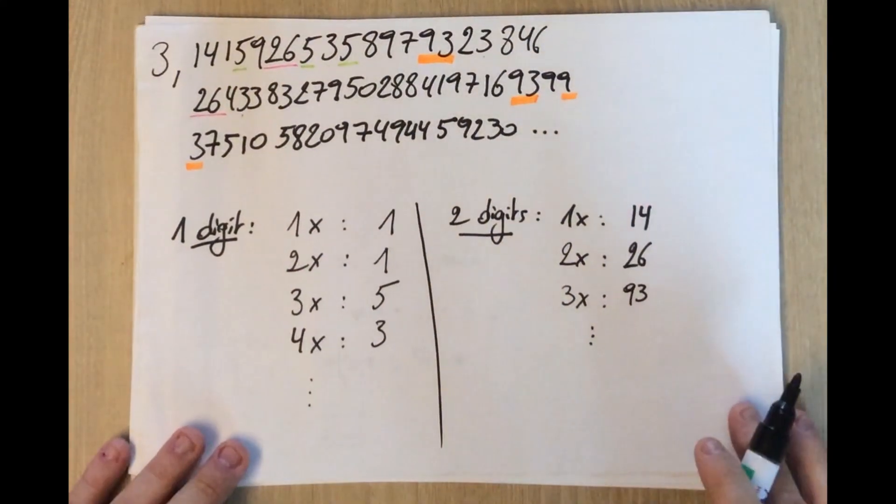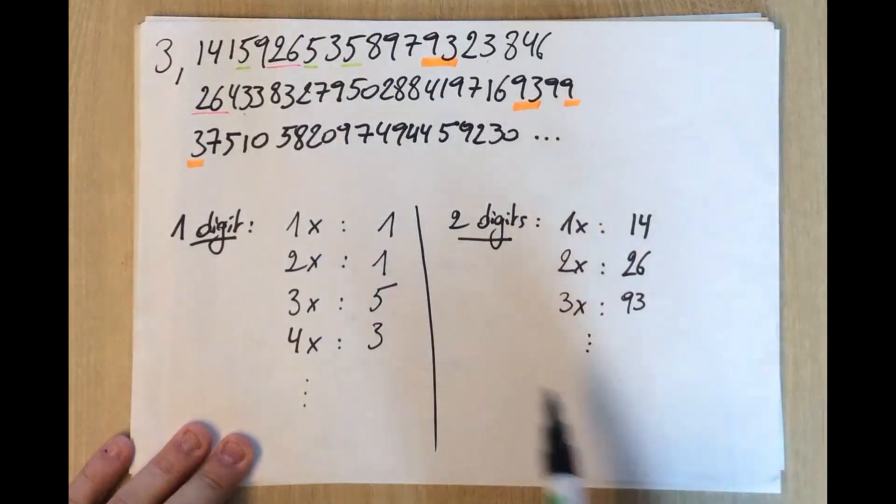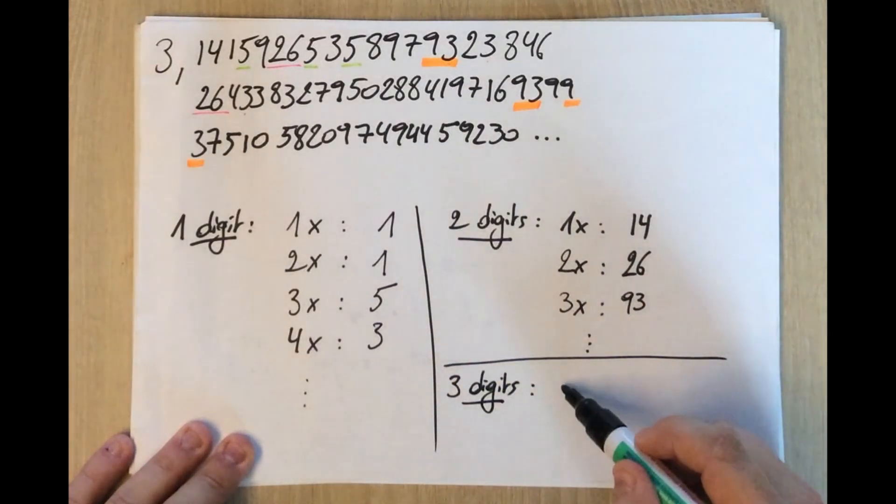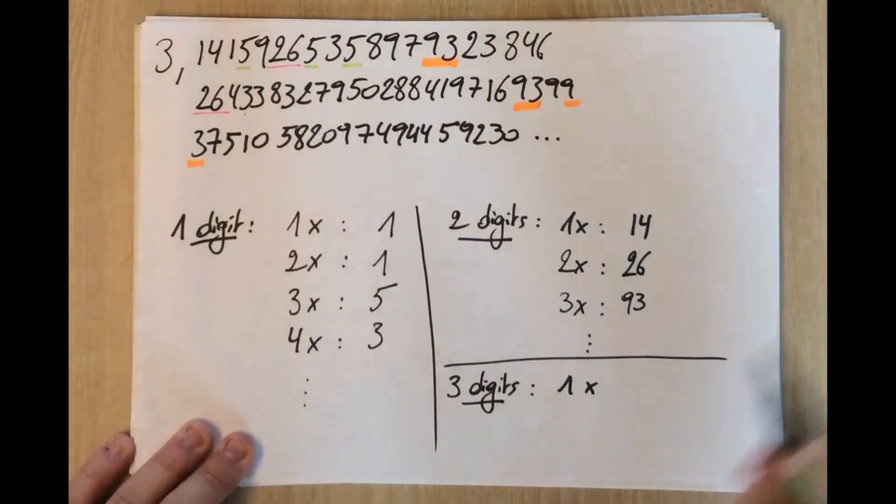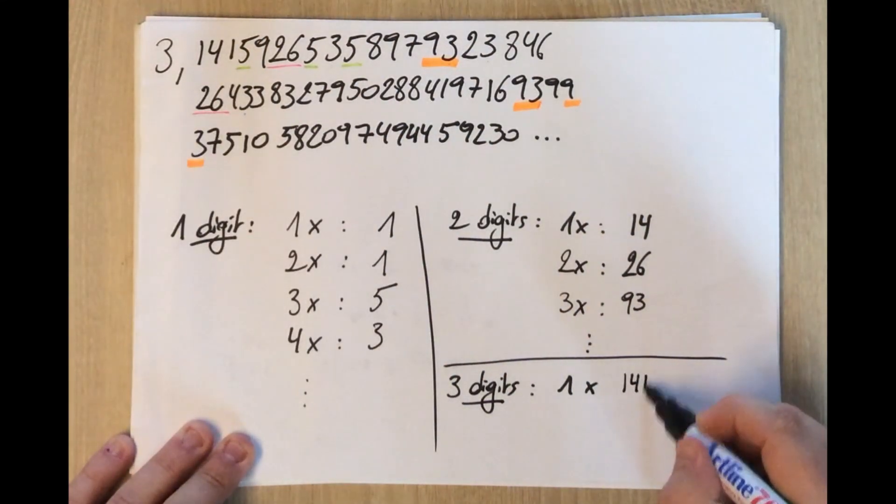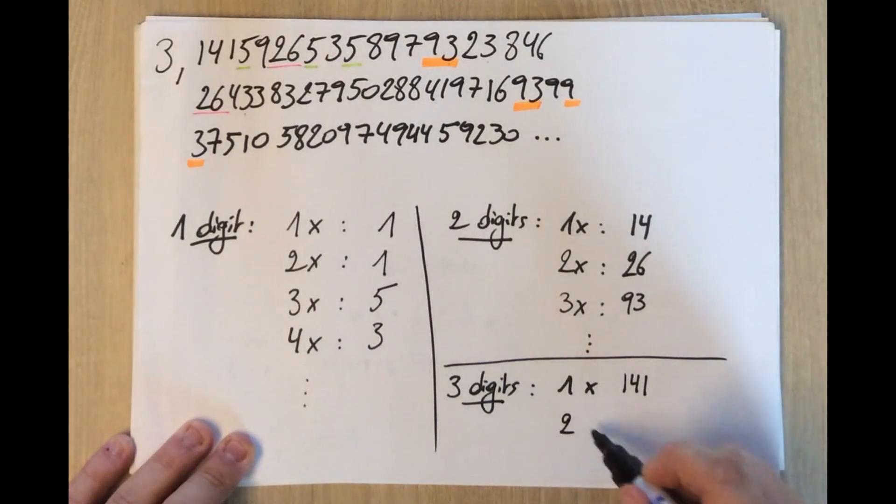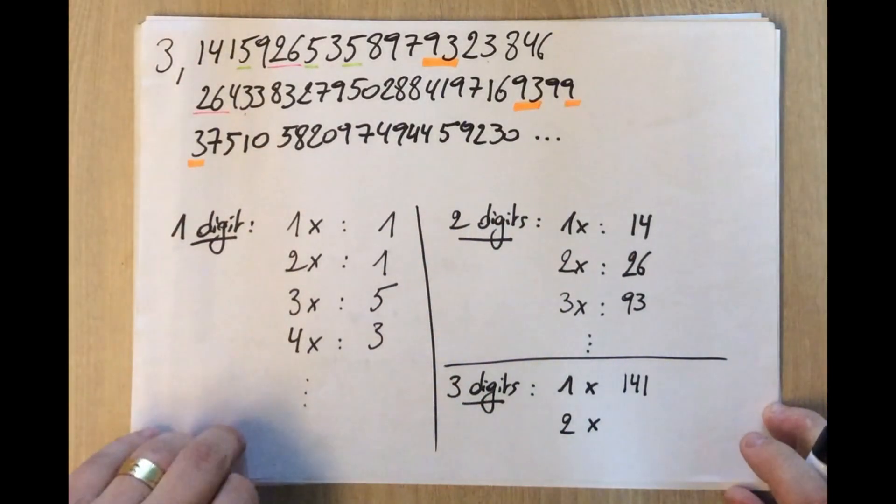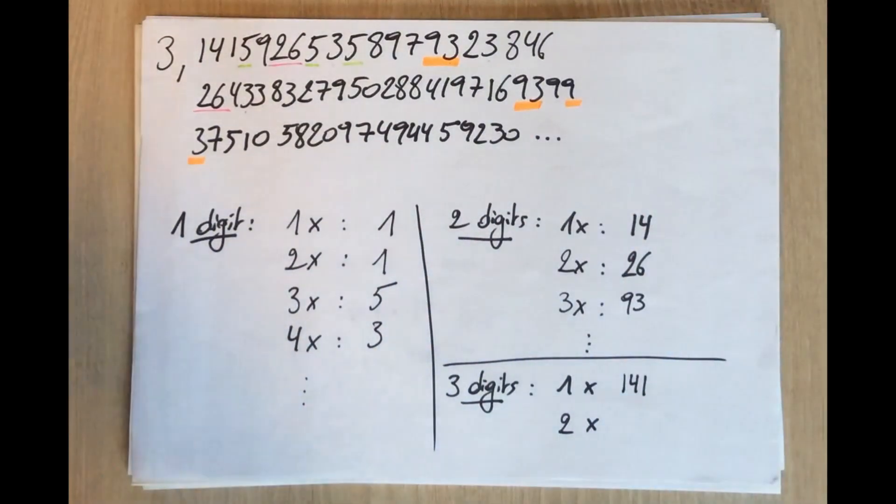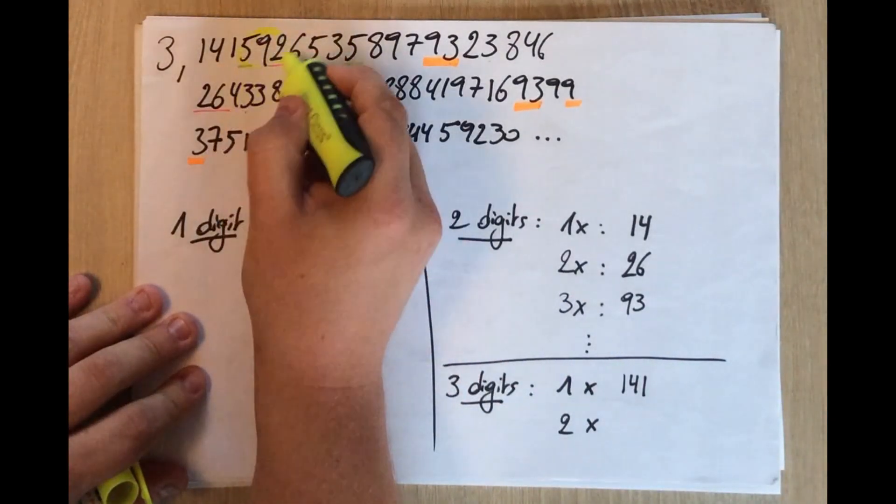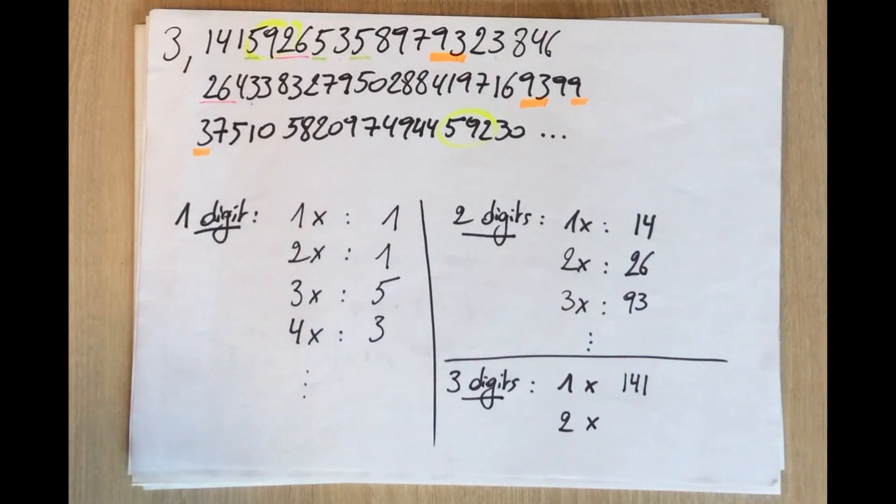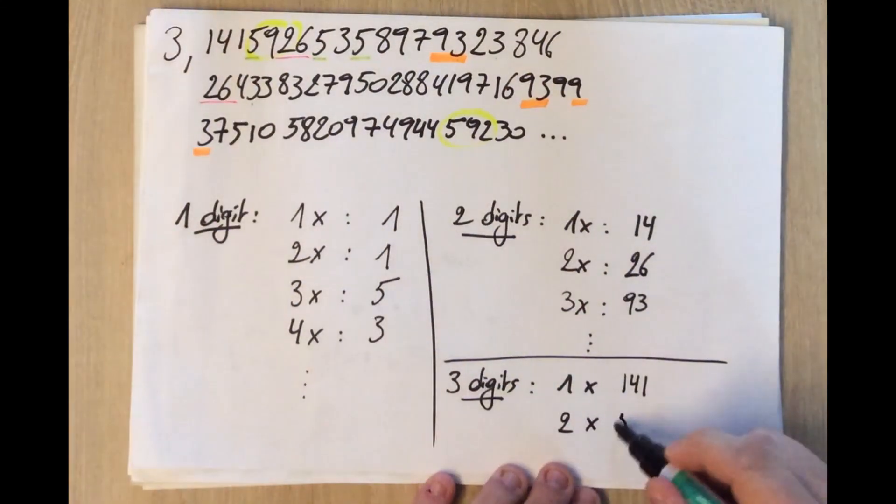Again, you can go on, look for the one appearing four times, the first one appearing five times, and so on. But we can, again, increase our number of digits. Three digits, again, starting at the first place. 141. And also, the second one in the row, so the first three-digit number appearing twice, can be found in this little piece of pi. It is 592. We can find it here, and we can find it here.